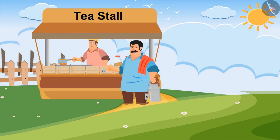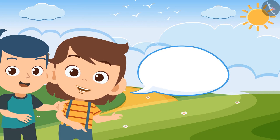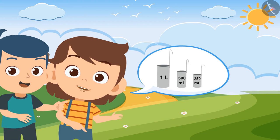Chandu brother, how much milk do you want today? I want four and a half litres of milk today. Look, Bholu, the milkman has four vessels. The largest one is of one litre, then 500 ml, then 250 ml, and then the smallest one is of 100 ml.